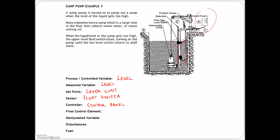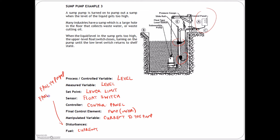The final control element is one of three things — a valve, a motor, or a heater. In this case we're turning on a pump, so that would be an example of a motor. What are we manipulating? We're manipulating current to the pump. The fuel: we're using current as our power source to our pump. Disturbances — something that's going to disrupt this system — could be a faulty pump, or a faulty flow switch. If that flow switch doesn't work properly, this whole circuit is done.